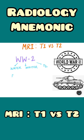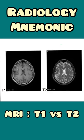Similarly, fat will be whiter in T1 weighted MRI. Likewise, in these two MRIs, if you clearly notice over here, the cerebrospinal fluid — the CSF — appears whiter. So as CSF, which contains water, is whiter, that means it is a T2 weighted MRI.